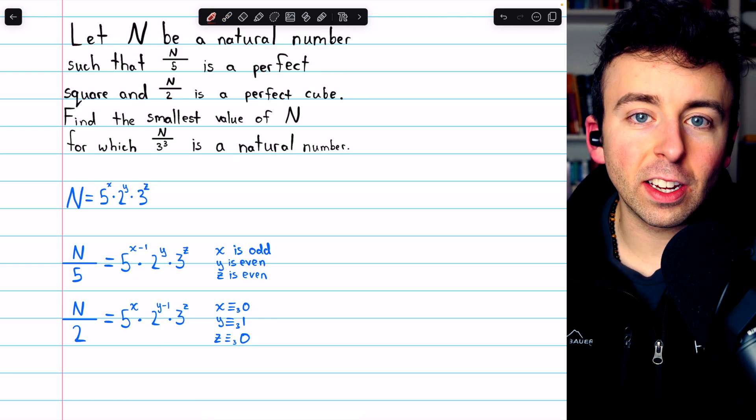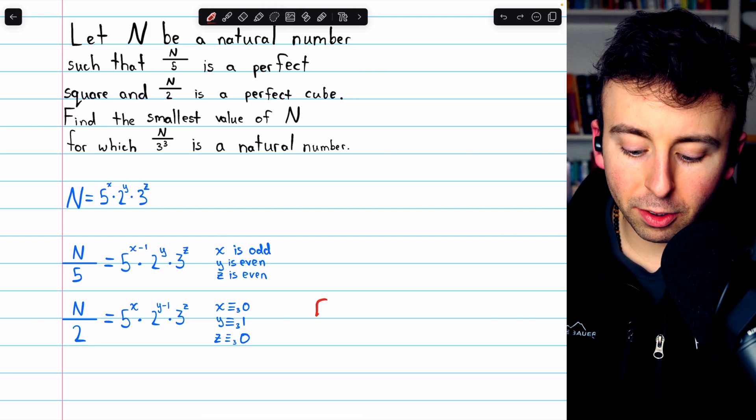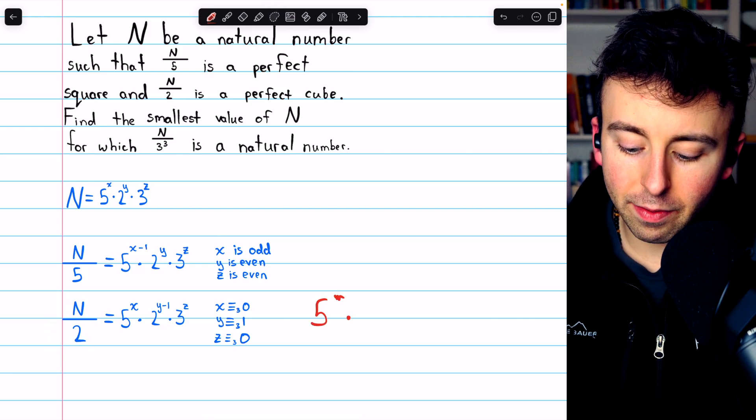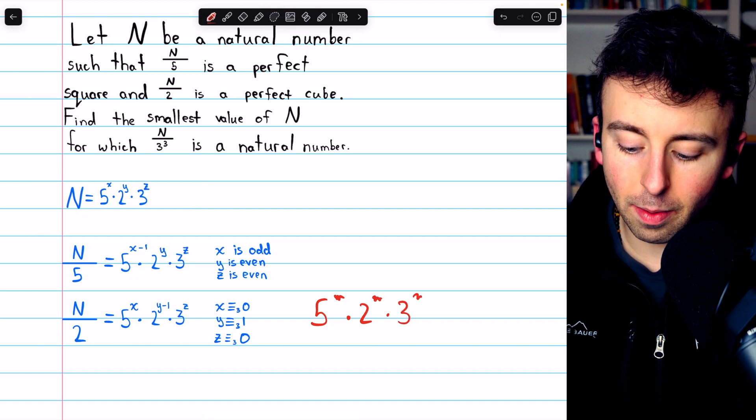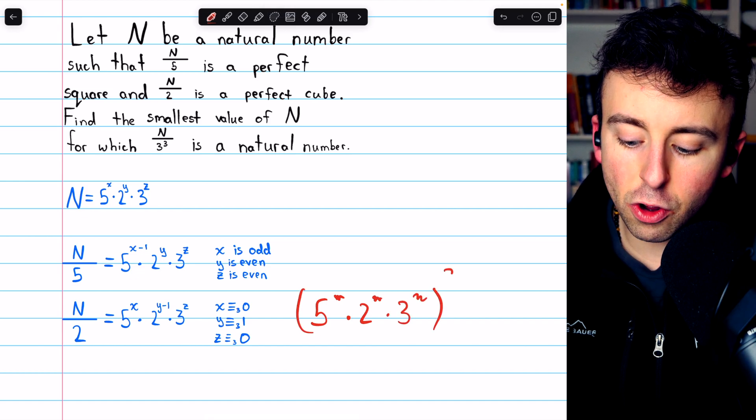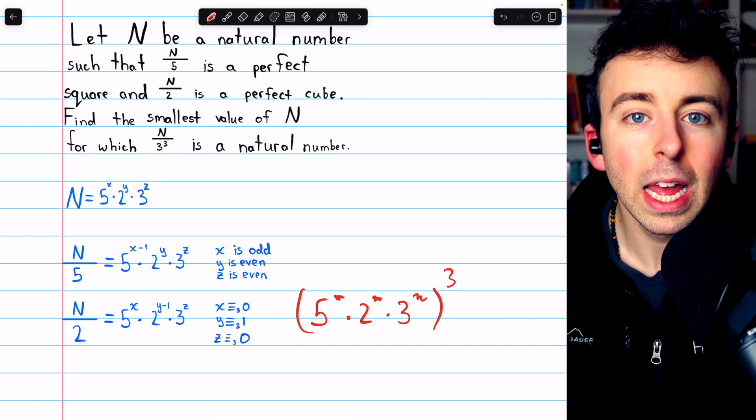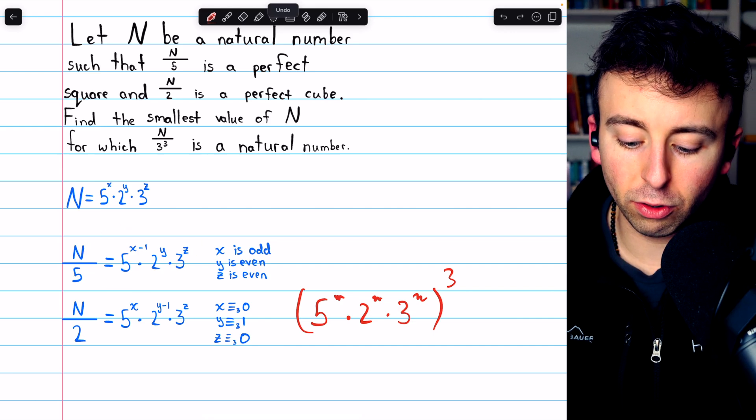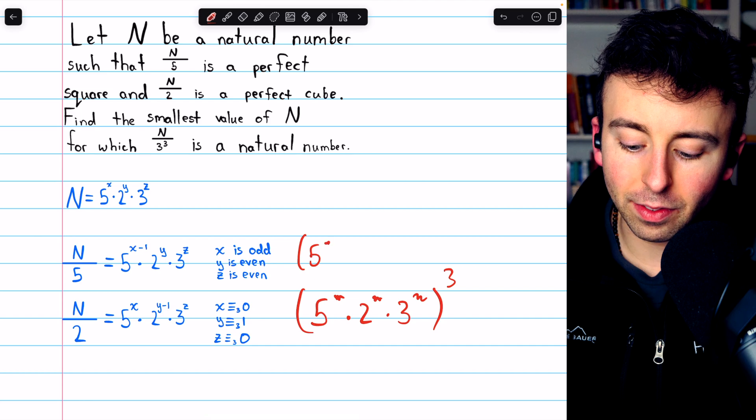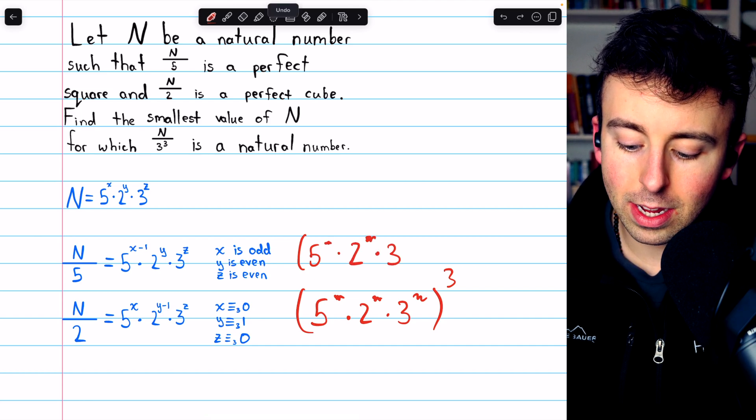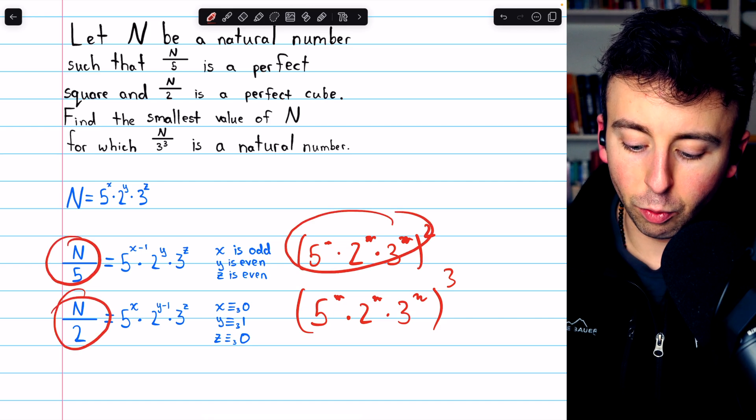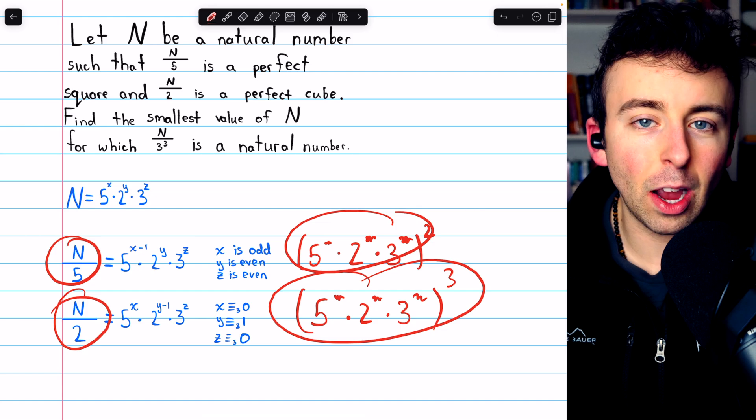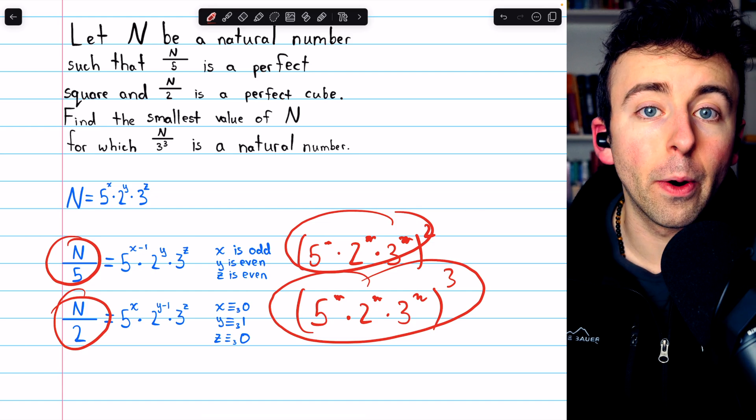And in case this logic is unclear, for this to be a perfect cube, it must be the case that we can write it as 5 to the something times 2 to the something times 3 to the something, all cubed. That's what it would mean for it to be a perfect cube. And we're using a similar logic for the square, right? We would have 5 to some power times 2 to some power times 3 to some power. This would have to be squared. These should be ways of writing the expressions, and that's how we get restrictions on our exponents.